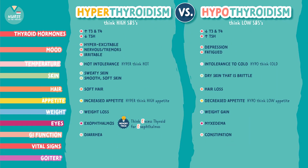Now let's compare vital signs — this is really simple. Hyper — think high vital signs; hypo — think low vital signs. In hyperthyroidism we see increased blood pressure and increased heart rate. In hypothyroidism we see decreased heart rate and decreased blood pressure.